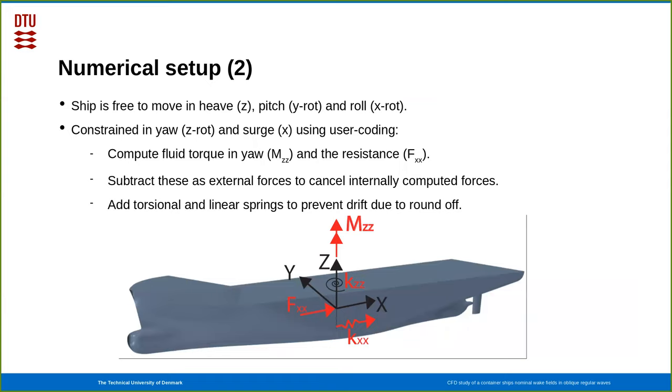The ship is free to move in heave, pitch, and roll, but it's constrained, as it was in the experiments, in yaw and surge. In the present case, we did that by user coding, so we compute the fluid torque and the resistance, the fluid torque in yaw and the resistance. Since these two contributions will be added by the CFD software, we subtract them by external forces, so we cancel the internally computed forces. This can result in a slight drift due to round-off, so we add a small torsional and linear spring to prevent drift, and that constrains the motion of the ship to only heave, pitch, and roll.